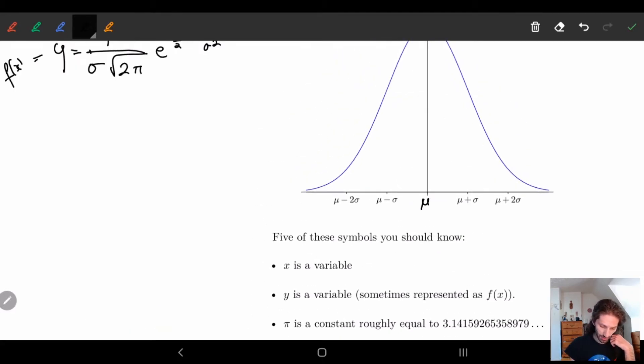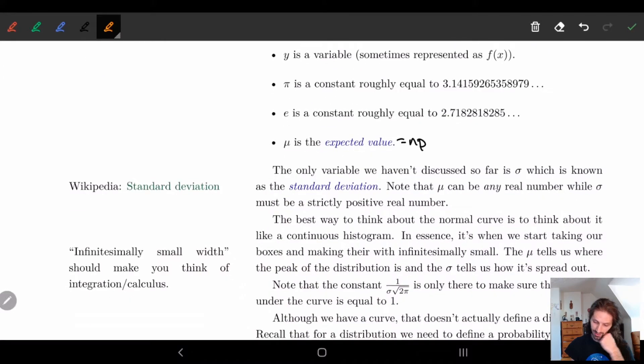And the only thing that we're missing really is the sigma. So what is the sigma? The sigma is known as the standard deviation.